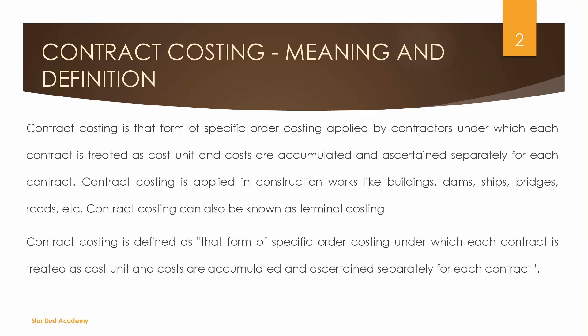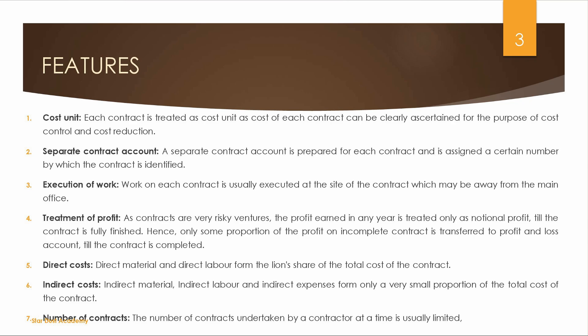Contract Costing is defined as that form of Specific Order Costing under which each contract is treated as a Cost Unit. Costs are accumulated and ascertained separately for each contract, and we need to maintain a separate contract account for each.